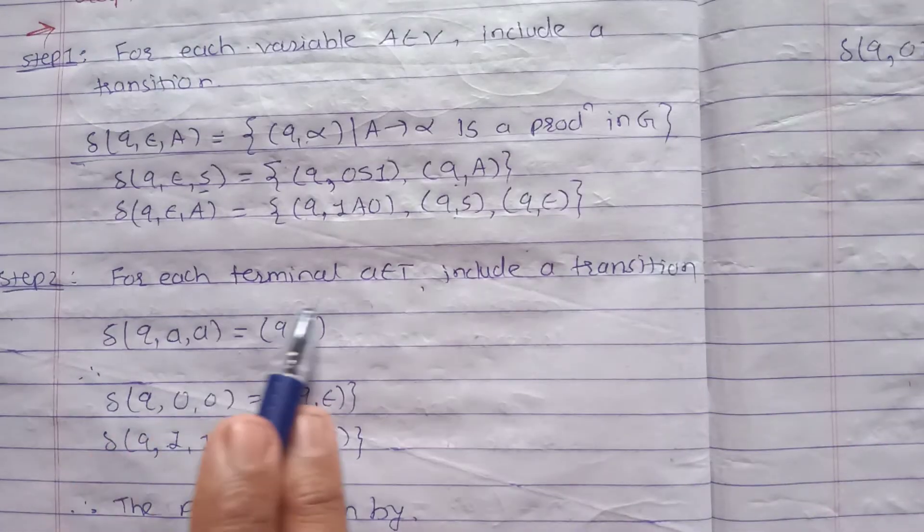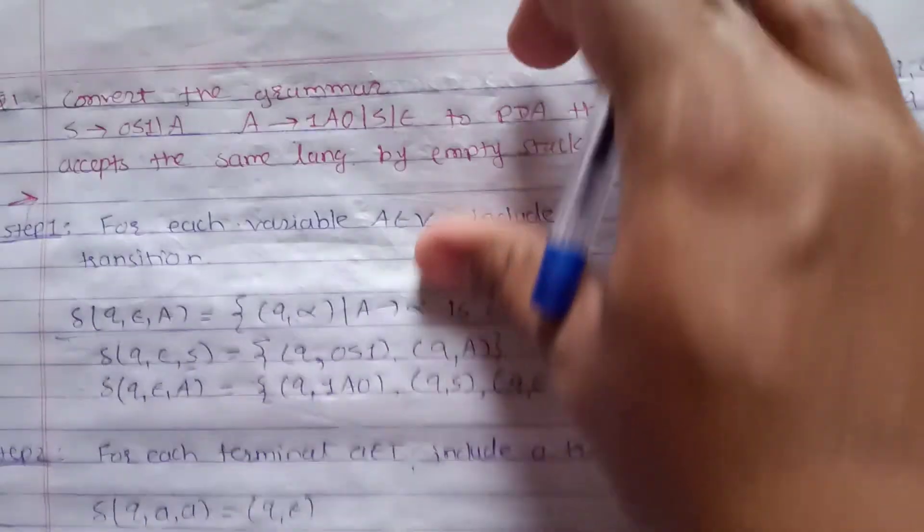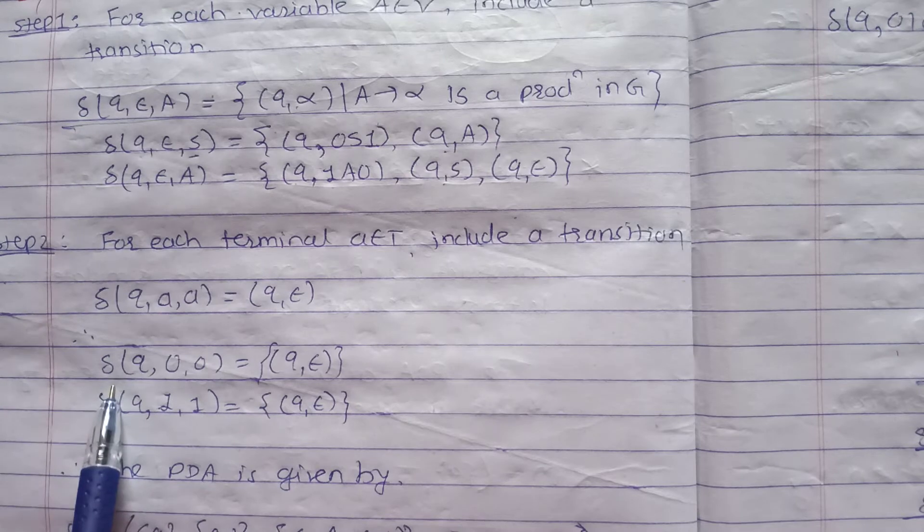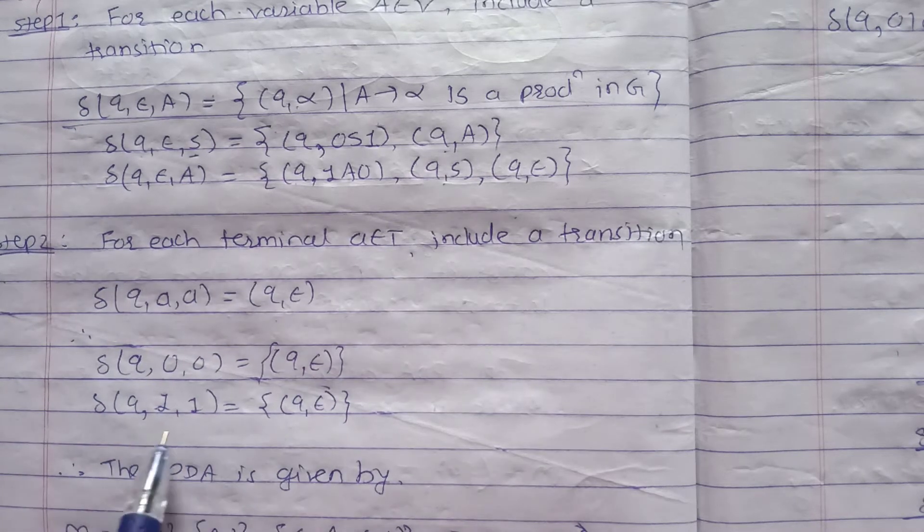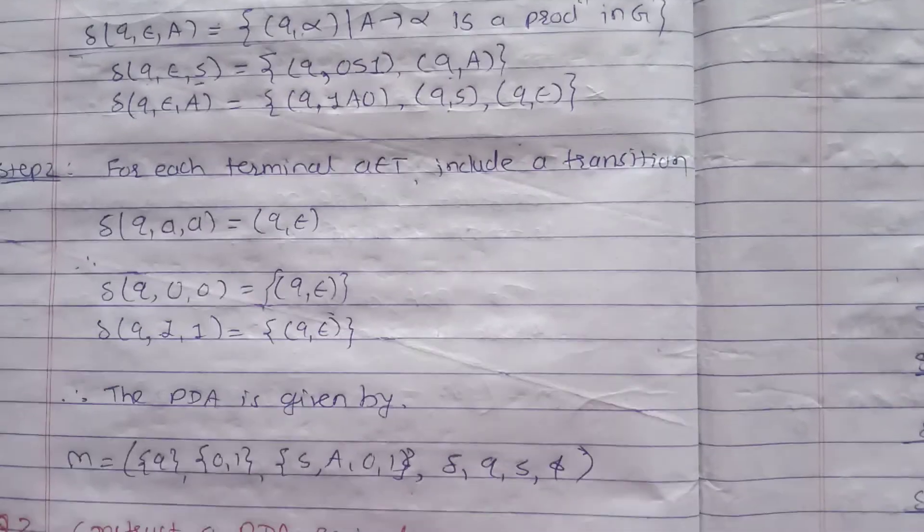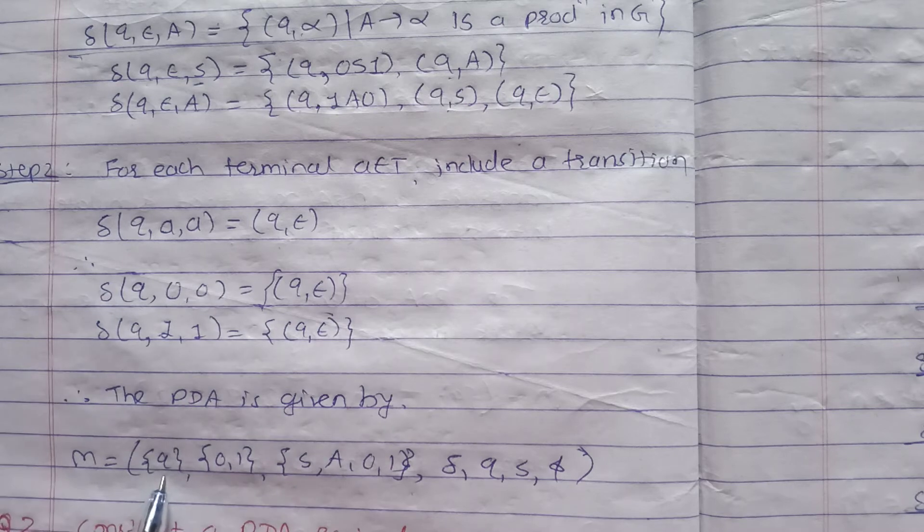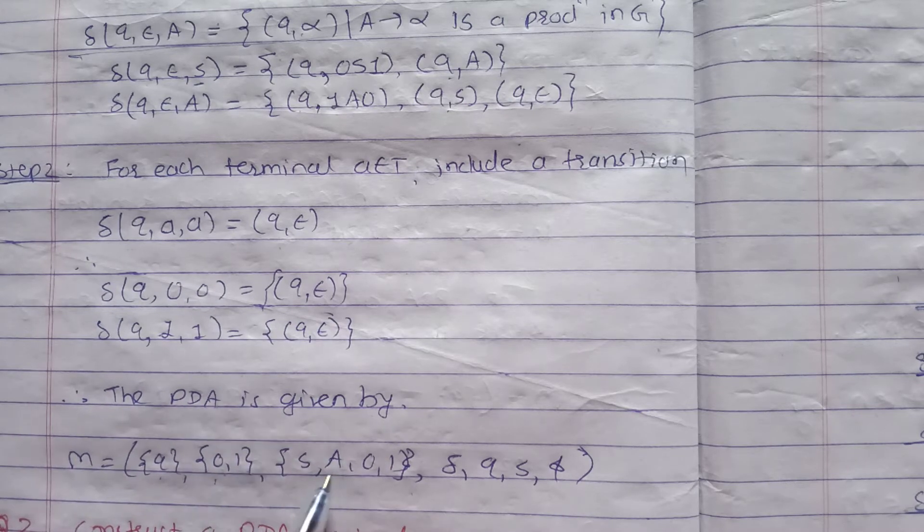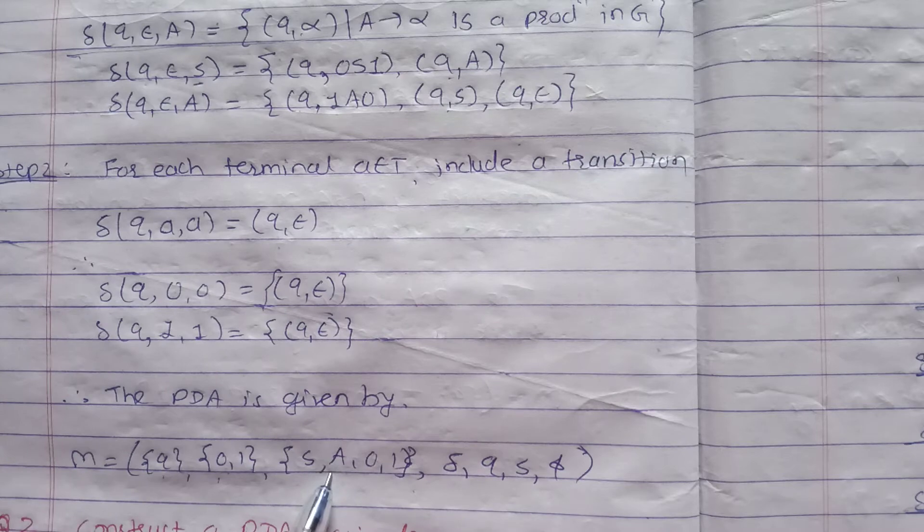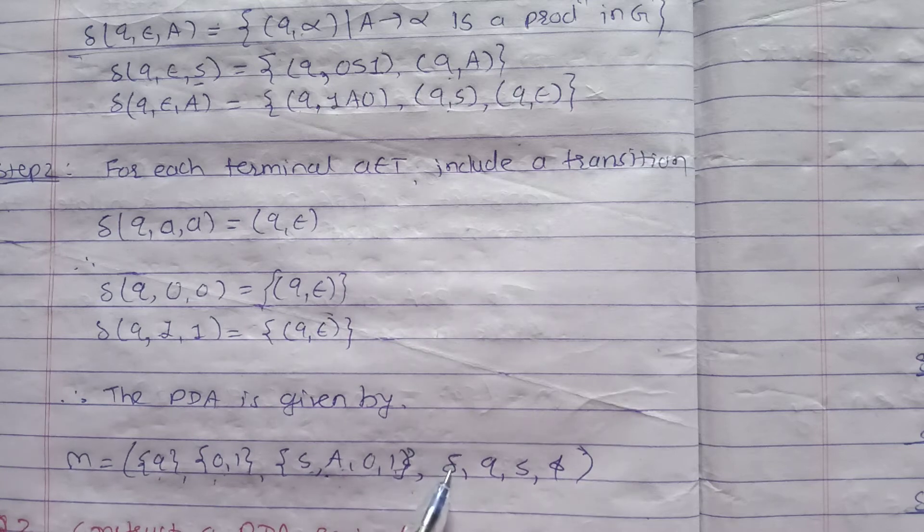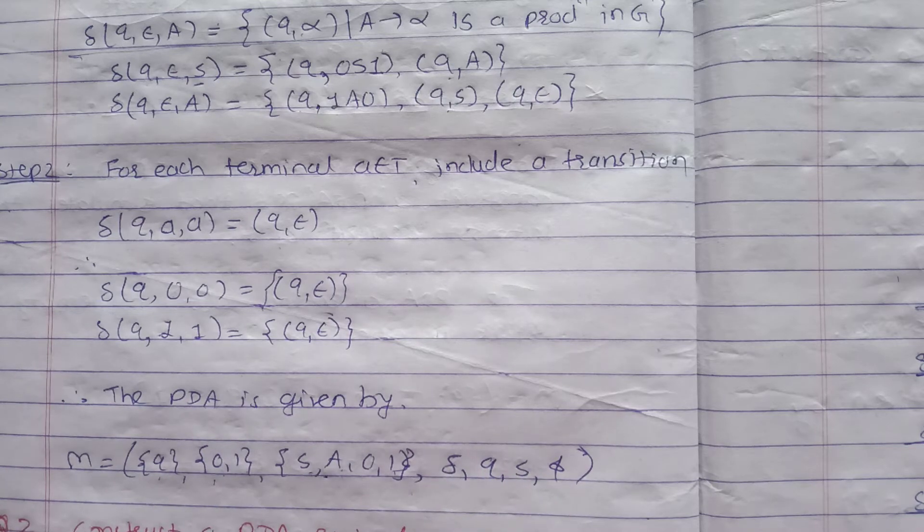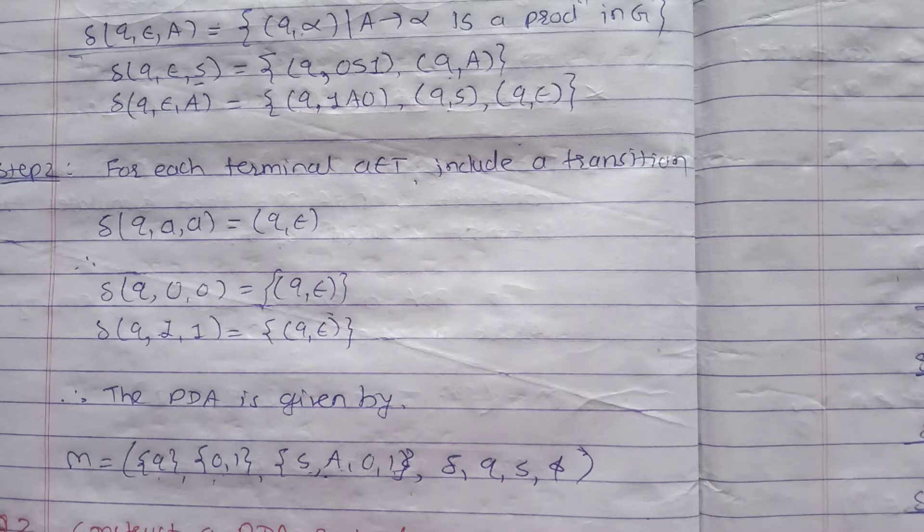Now second step: for each terminal a belongs to T include a transition. How many terminals we have? 0 and 1, two. Those two we include: δ(q, 0, 0) equals (q, ε), δ(q, 1, 1) equals (q, ε). Therefore the PDA is given by Q, terminal that is {0,1}, and Γ is variable union terminal that is {S, A, 0, 1}, delta, q, S, phi.